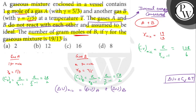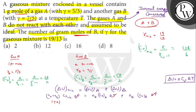So, (number of moles of A + number of moles of B) times Cv of mixture times delta T equals (moles of A times Cv_A times delta T) plus (moles of B times Cv_B times delta T). Cancelling delta T: (1 + x) times 13R/6 equals 1 times 3R/2 plus x times 5R/2.